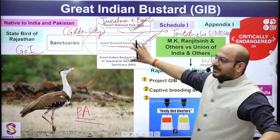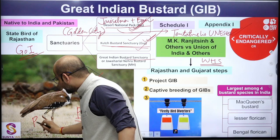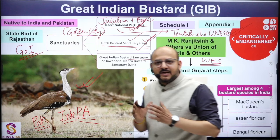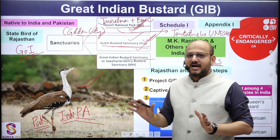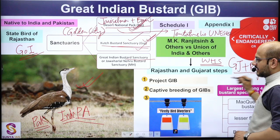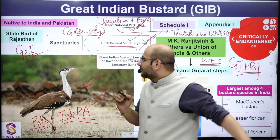Next question — is the Great Indian Bustard endemic to India? No, it is found in India as well as Pakistan. In India it is mostly found in Rajasthan and Gujarat, but small populations are also present in Maharashtra, Andhra Pradesh, and Karnataka. The habitat has a special type of grass called Siwan grass — S-E-W-A-N — found in the habitats of the Great Indian Bustard.